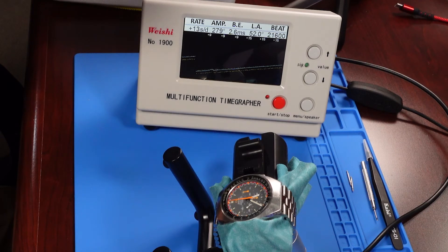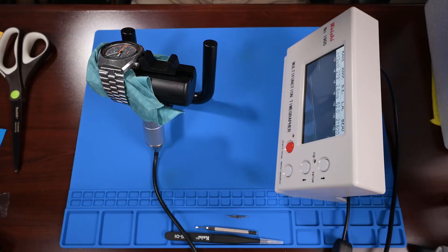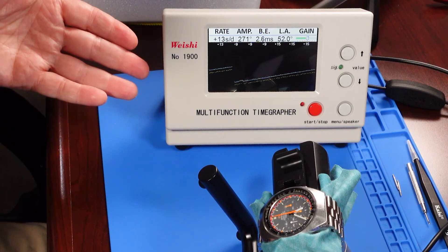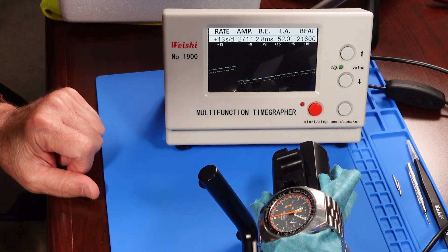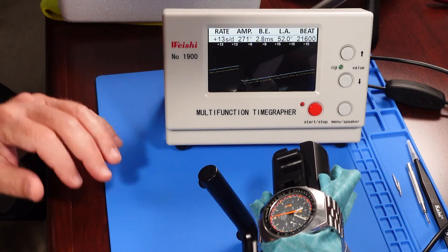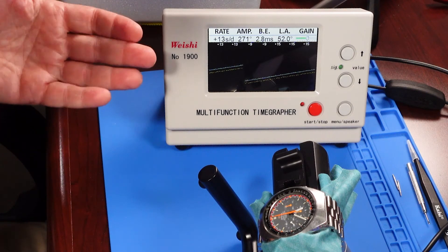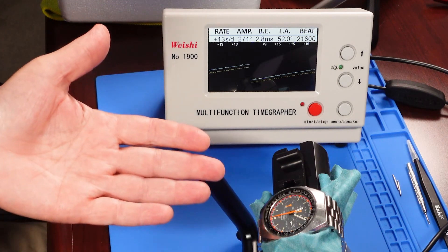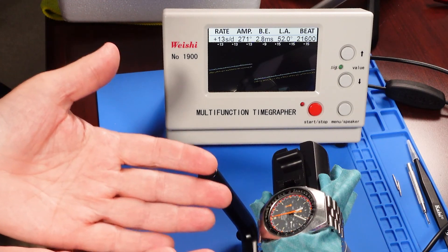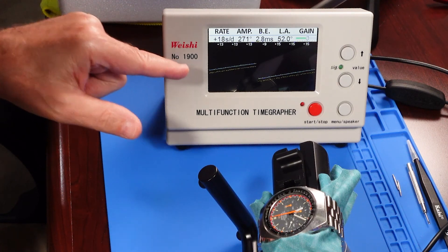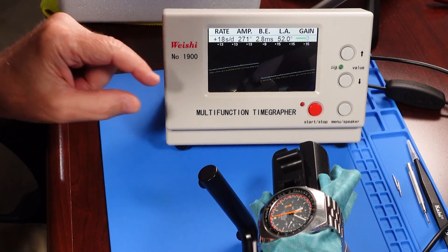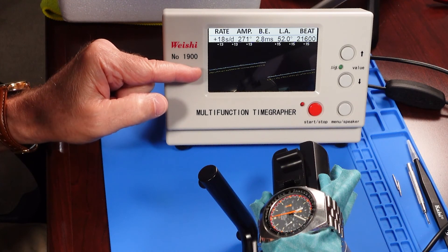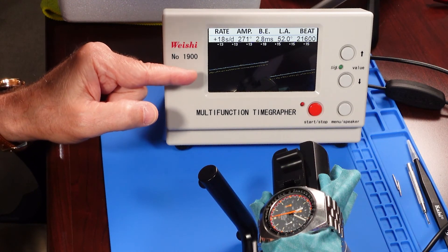So there you have it. It's pretty straightforward. I like the display on this Weishi number 1900 multi-function timegrapher. I look forward to digging into it and learning not just how to use the equipment, but how it relates to the watch, and you know, how a good servicing and adjustment can help us get this line completely horizontal and get that beat error line, those two parallel lines, close together, hopefully overlapping so the difference is invisible.